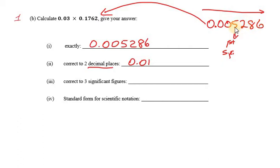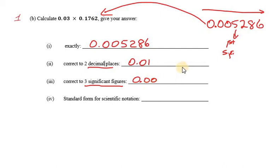We have four significant figures in total. But we're asked to only take three. Even though we're writing these zeros from the beginning of the number, they are not significant — they're what we call placeholders, holding the place value of the other digits. For instance, this 5 is 5 thousandths, because you have tenths, hundredths, thousandths. We want to maintain the place values of all the digits. So far we have one significant figure with some placeholders at the beginning.